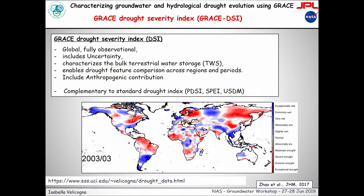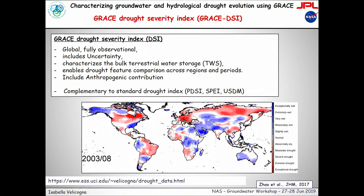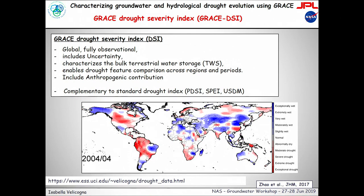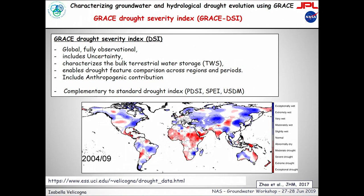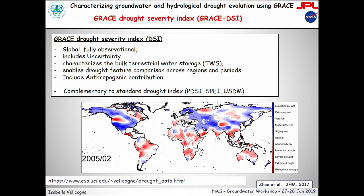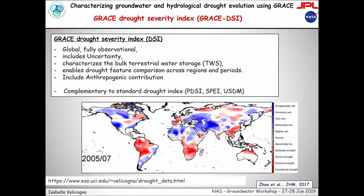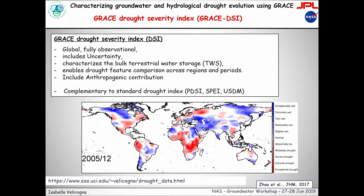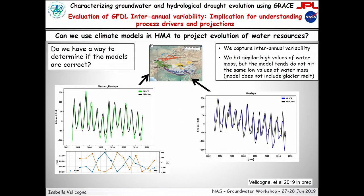We evaluate this in the U.S. This is information that we can use at the global scale, characterized by an uncertainty, and it complements the other drought indices so it can be used to interpret the signal. This is an evaluation in a very difficult area: we're looking at High Mountain Asia and whether we can use GRACE to evaluate a model.